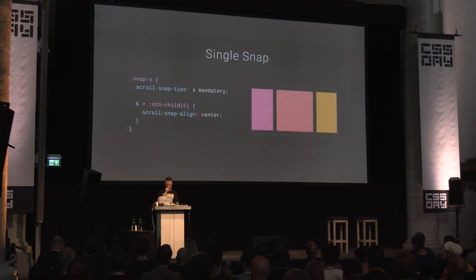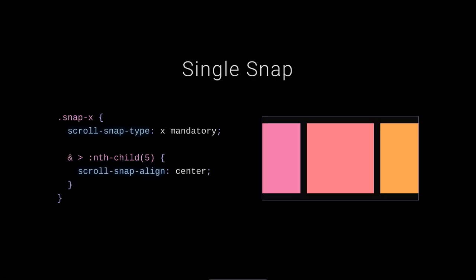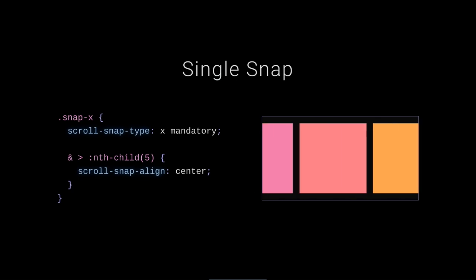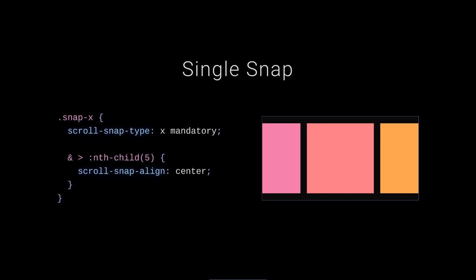Most people don't know you can do some of this stuff with scroll snap. For example, a single snap point: instead of targeting every child like a carousel, you can find just the fifth child and snap only to it. With mandatory mode, I literally can't go anywhere else — it just snaps only to that one item. That might look ridiculous, but I'm going to show you how that ends up being really useful.